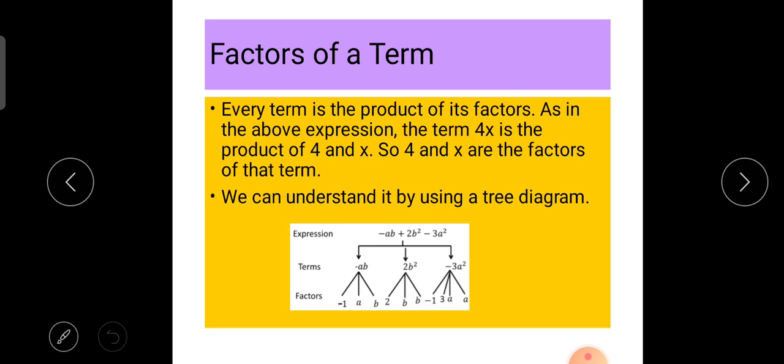Factors of a term: Every term is the product of its factors. As in the above expression, the term 4x is the product of 4 and x. So 4 and x are the factors of that term. We can understand it by using a tree diagram.